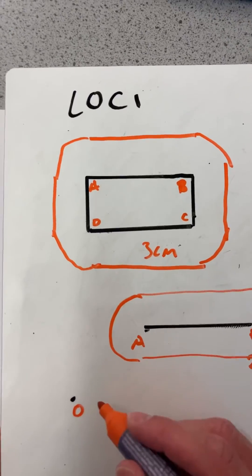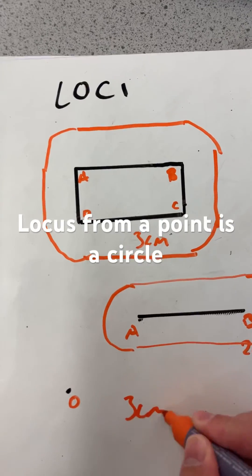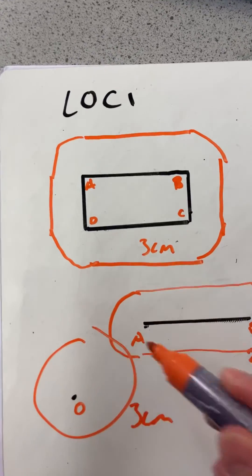That shows us that if we were asked to do from a point again three centimeters which is a compass all around, we get a circle which is a locus.